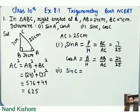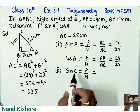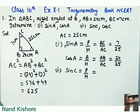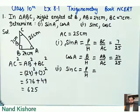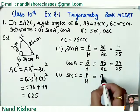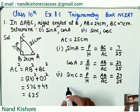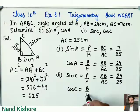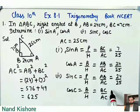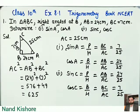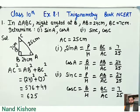Now the angle changes from A to C. Sine is still perpendicular upon hypotenuse, but when we use angle C, angle C and 90° together make the base — so BC is the base and AB becomes the perpendicular. Perpendicular AB = 24, hypotenuse AC = 25, so sine C = 24/25. And cos C = base upon hypotenuse, base is BC = 7, hypotenuse AC = 25, so cos C = 7/25.